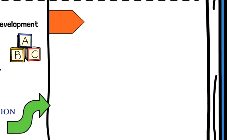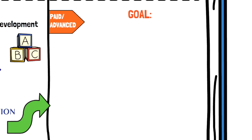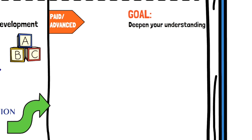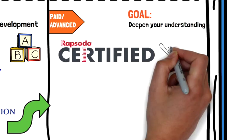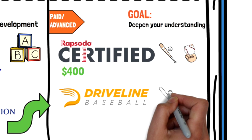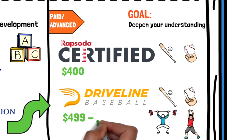Moving on to the advanced section — this section actually contains a lot of beginner information as well. The difference is it becomes more specialized and takes things a bit deeper, which is reflected in the price. The two most popular places I've seen individuals acquire certifications through include the Rapsodo certification, which has both a hitting and pitching certification course for about $400 each, and Driveline, which has a ton of courses covering hitting, pitching, pitch design, strength training, and even youth coaching. Their courses are backed by industry-leading research and will cost you anywhere from $500 to $1,000. But if you feel you're in a pretty good spot understanding the sites we've discussed, adding Driveline certified to your resume could be a great next step.